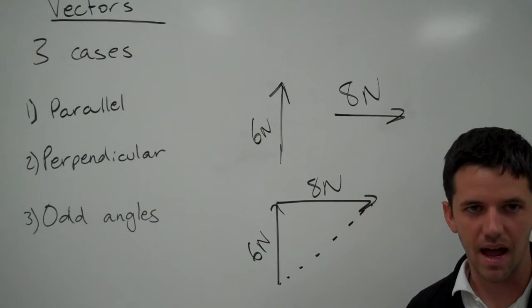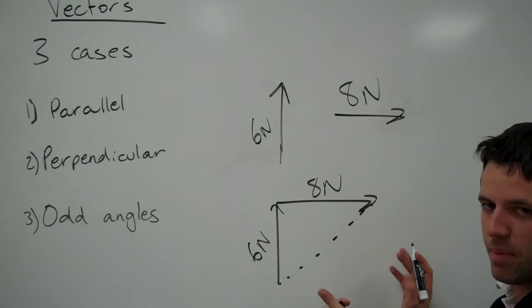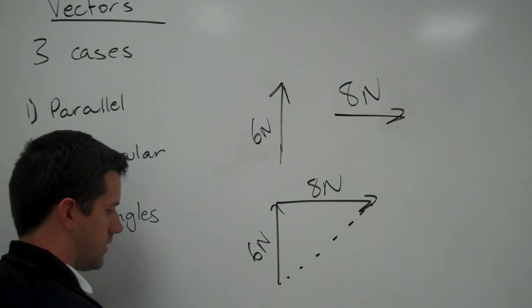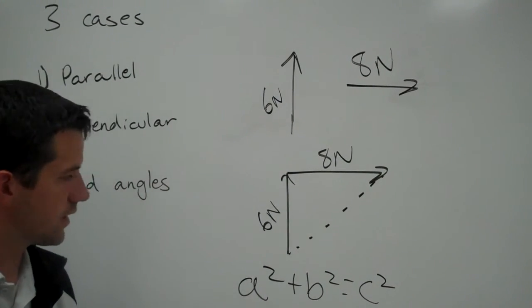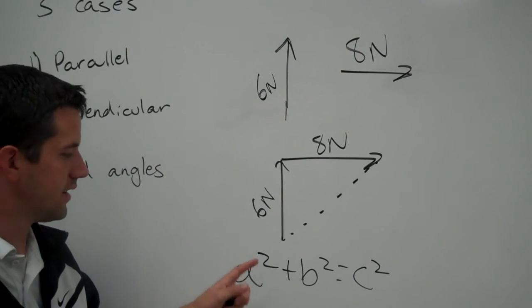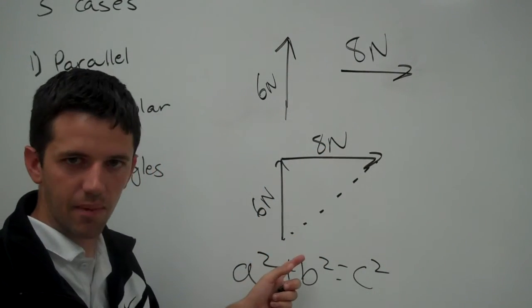Now hopefully from all our nice math classes and geometry classes we know we can solve for the hypotenuse using the Pythagorean theorem. The Pythagorean theorem is A squared plus B squared equals C squared. We have A being side 1, B being side 2, and C being your hypotenuse.